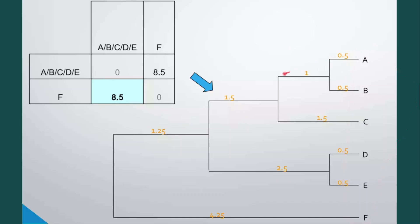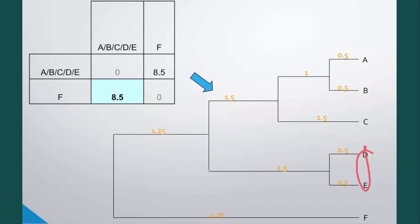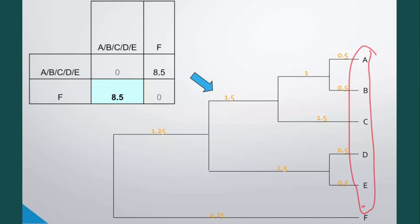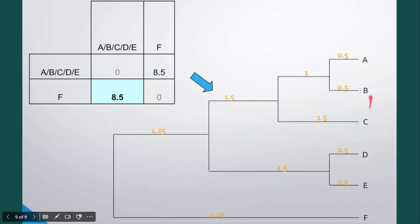All taxa are now clustered together and we have applied the UPGMA method to build a complete phylogenetic tree. In this tree, A and B are closely related, D and E are closely related, AB and C form a cluster, ABC and DE are closely related, and the entire ABCDE cluster is related to F. This is the ancestral node, with all taxa joined together in the phylogenetic tree.